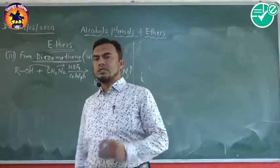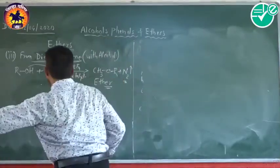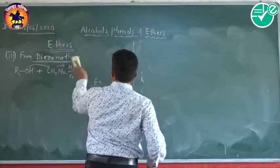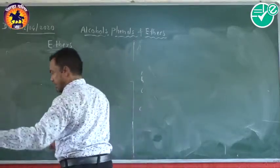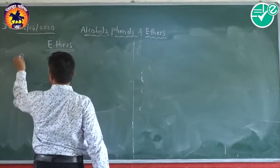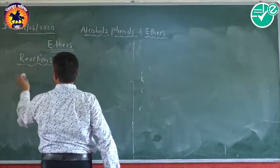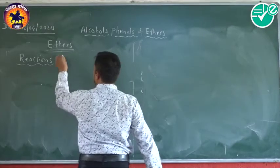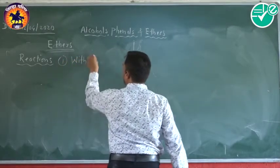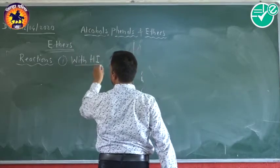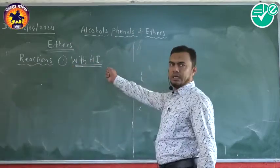We will discuss the reactions of ethers. Here are two different reactions of ethers. The first one is with hydrogen iodide — that is the reaction of ethers with hydrogen iodide.